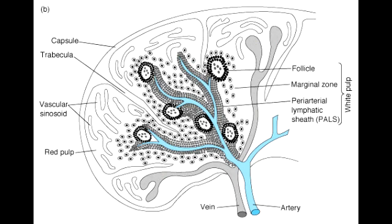A few additional notes: the follicles contain the germinal center in which there are B cells; red pulp contains the red blood cells; peri-arterial lymphatic sheath contains T cells; and the marginal zone has the antigen-presenting cells.